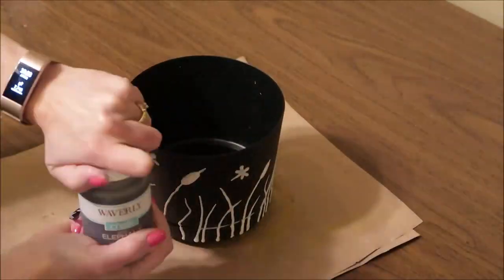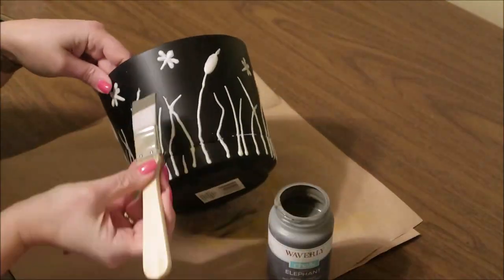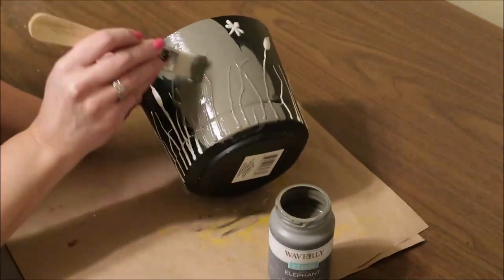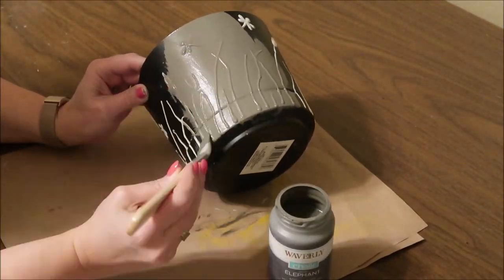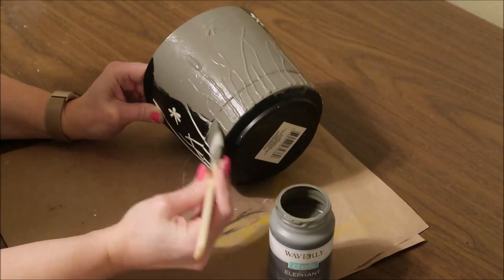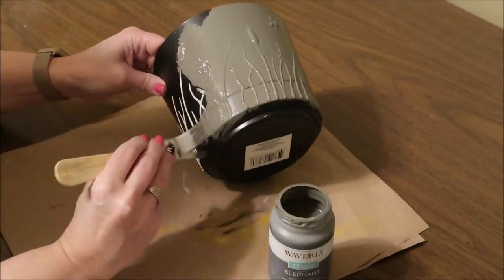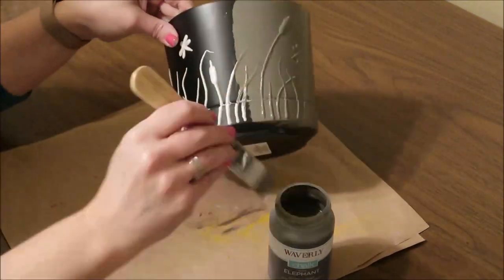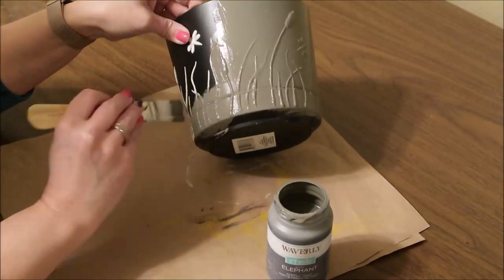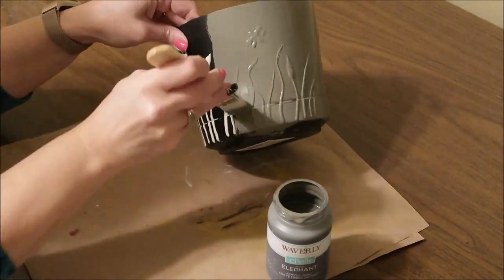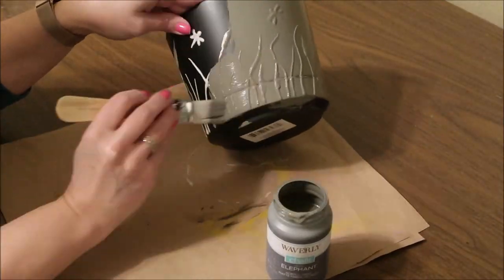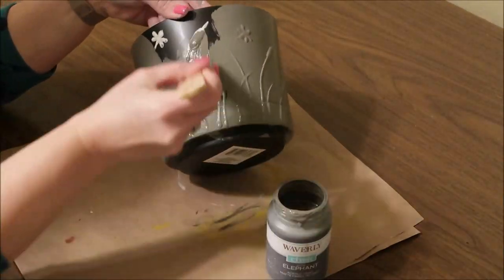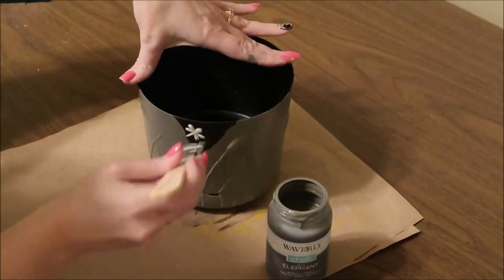Again, you'll want to let your 3D puffy paint dry completely, overnight is best. And then I didn't show it here, but I did spray this with the matte finish sealer as well, just to help my paint stick to it a little bit better. I'm going to use the elephant chalk paint to paint this because I'm going for more of a cement planter look for this one. So I'm just going to paint the whole thing with the elephant chalk paint.